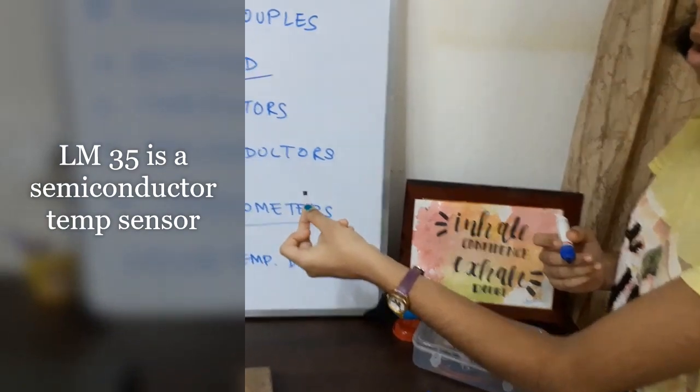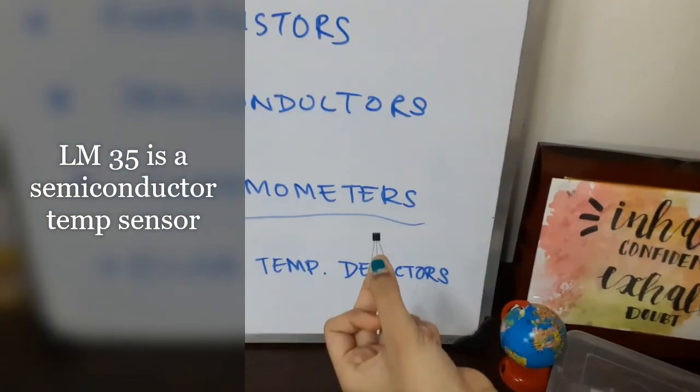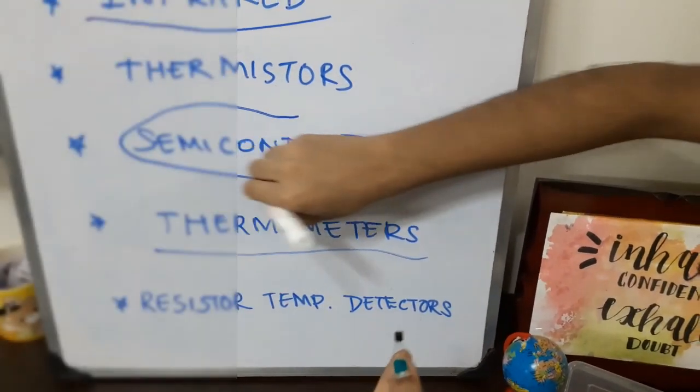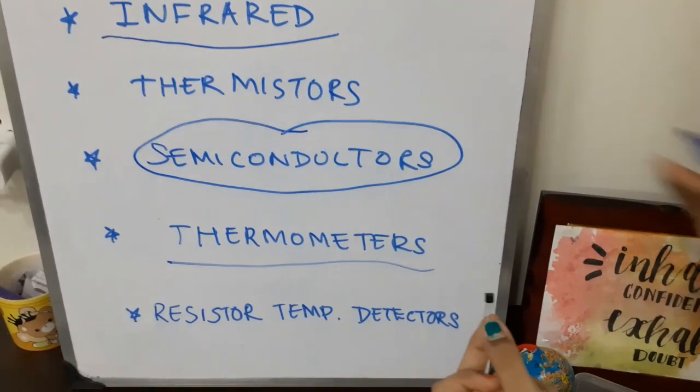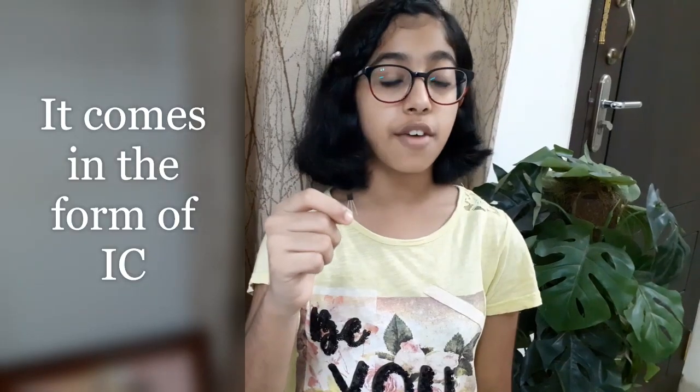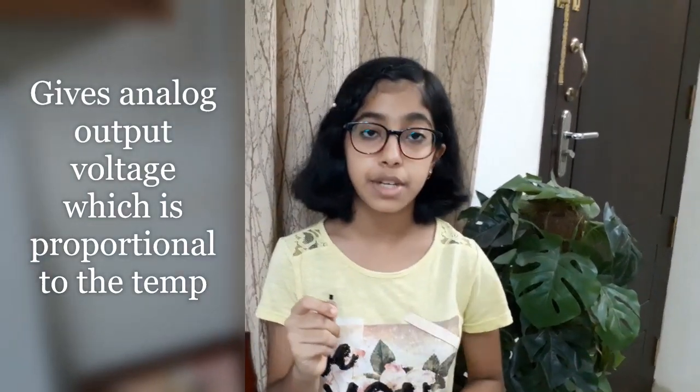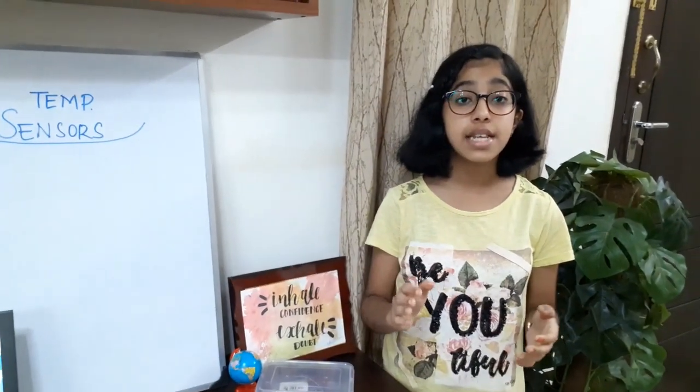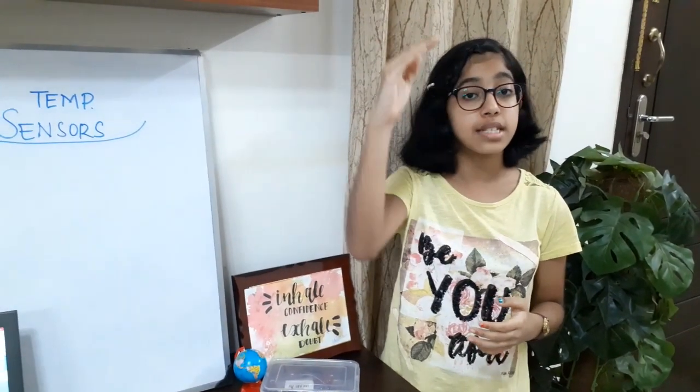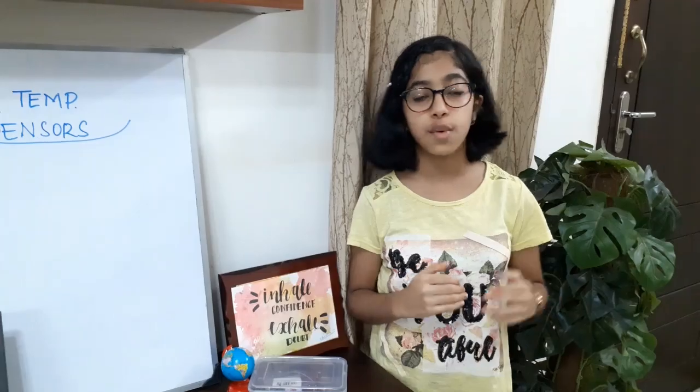LM35, about which we are going to learn today, is a semiconductor temperature sensor. It comes in the form of ICs. It gives analog output voltage, which is directly proportional to the temperature. It means, as the temperature increases, the output voltage also increases.